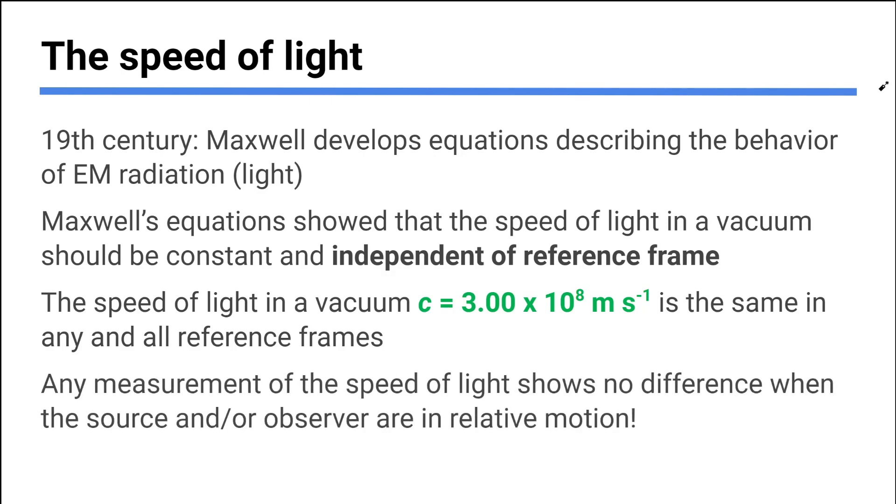So, the speed of light in a vacuum is a number in your data booklet. You will know it very well. We're going to use it all the time. But it's 300 million meters per second. Light is super fast. 3 times 10 to the 8. And it's the same in any and all reference frames. So keep that in your head, because it's going to be crazy.